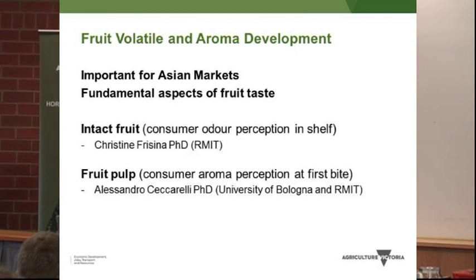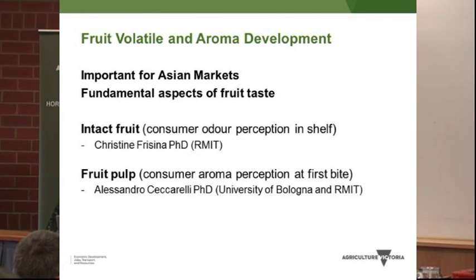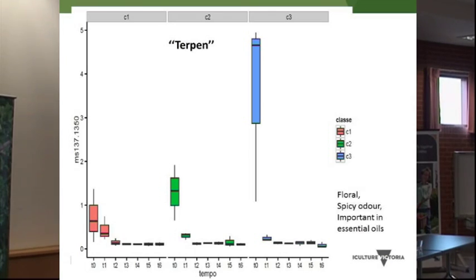Coming out at the value the consumer would like — how is the quality when you take it out, and how is it when you put it in? Our department is looking at quality aspects very important for the Asian market: taste and aroma. We are looking at fruit volatiles in intact fruit — what the consumer smells when making a choice — and in fruit pulp, which is what they taste when they bite into it, a completely different kind of aroma.